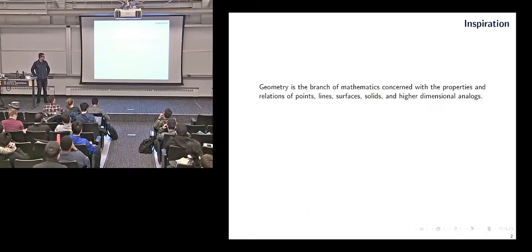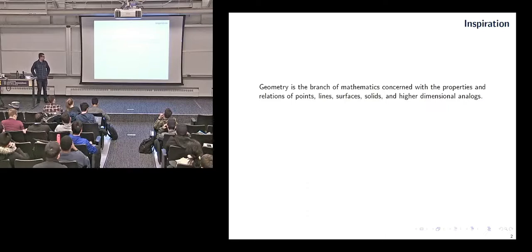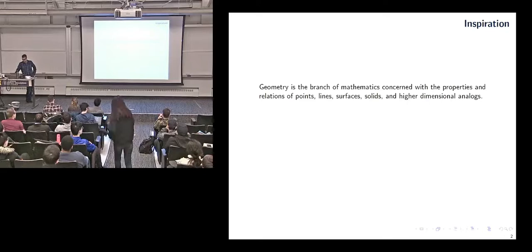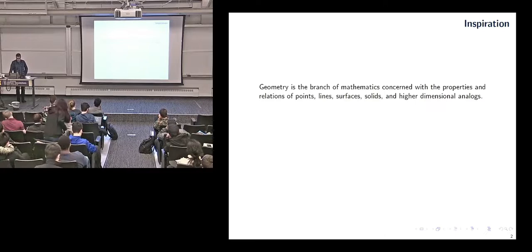To start with, geometry is just a branch of math concerned with points, lines, surfaces, solids, and other stuff — according to dictionary.com. But of course this is a very vague and not very helpful definition. And of course, if you go back to the last slide, we're talking about Riemannian geometry specifically, so there's going to be some specificity here.